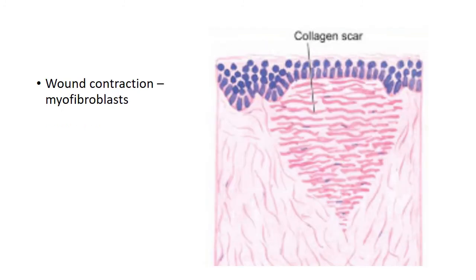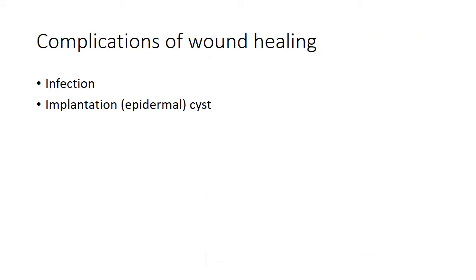Due to the action of myofibroblasts there is also contraction of the wound, and this contraction is very large — the wound contracts to about one-third to one-fourth of its original size. So this is secondary healing.